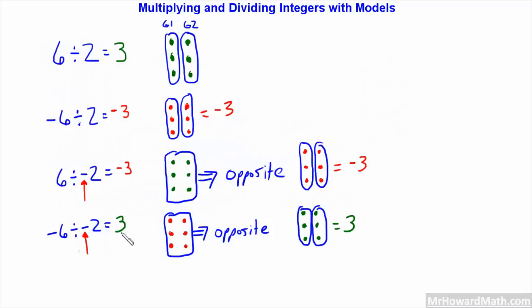We've worked through some multiplying and dividing. This will apply to whatever numbers you use. The key is understanding how we're applying these rules and using these models to make the connection. Hopefully this will help you understand what the rules actually mean and where they came from. Watch it as many times as you need to — once you understand it, you'll have a thorough understanding of multiplying and dividing positive and negative numbers.